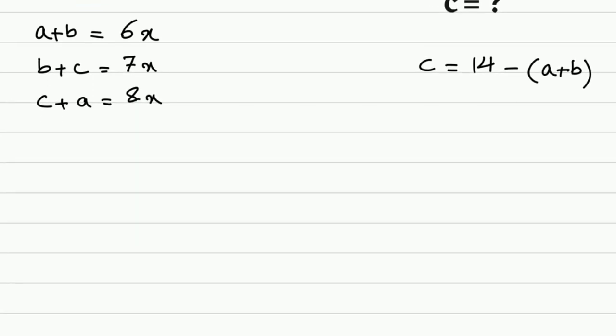Now we just need to solve this simple system of equations. Let's add everything together. 2 times a plus 2 times b plus 2 times c, and on the right hand side we have 6x, 7x, 8x.